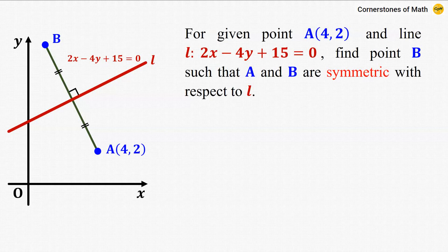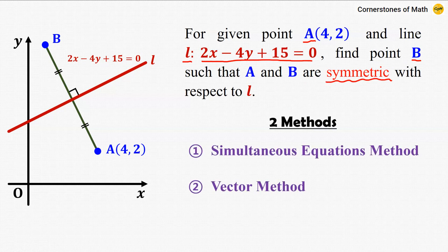Hello and welcome to yet another video of Cornerstones of Math. Today we are back to coordinate geometry and we will tackle one of the most famous types of problems in basic coordinate geometry. For given point A which is (4, 2) and line L given as 2x minus 4y plus 15 equals 0, find point B such that A and B are symmetric with respect to line L. I will present two methods — both are pretty basic but beautiful. The first method is simple simultaneous equations and the second method uses vectors.